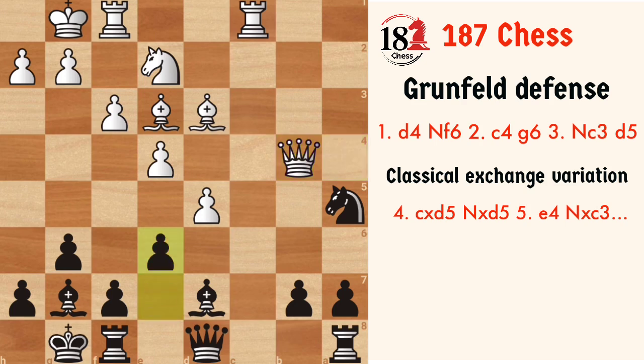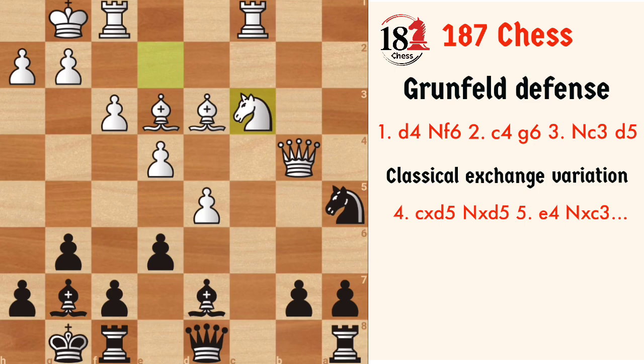This frees up the position for black — if white takes, we can take with our bishop, the c6 square will be available for the knight, we can move our queen, and then connect the rooks. So white will not do that and will play the best move, which is Nc3, protecting the d5 square so that whenever a capture happens on d5, he can recapture with the knight.